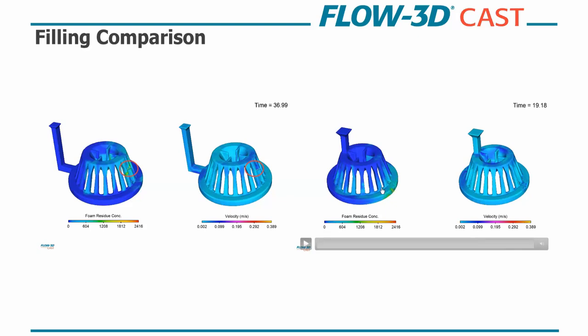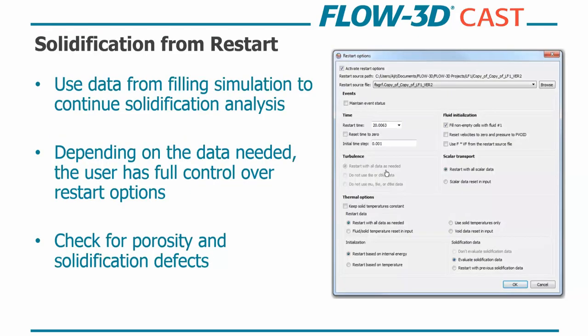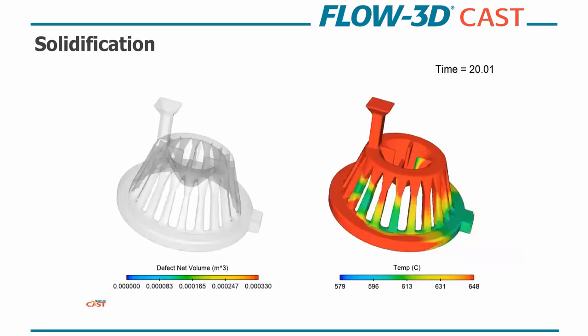So what we're going to do is we're going to solve that by adding a tab, and then we'll run this again, and then we'll run a solidification on it. So we're going to go with this solution here on the right. So once we fill the part, we do a solidification from restart. So what that is, we take all the data from the filling simulation, so all the thermal and flow data and solidification data, and that's used to continue on to a solidification analysis. And this user has full control over the restart. So this can happen at the very end if they're just interested in something in the middle of the fill. And then here we'll look at porosity and solidification defects as well. So here you see we've added this extra tab here to take care of that residual defect concentration to have that flow out to the end. So we get a full fill here all the way.